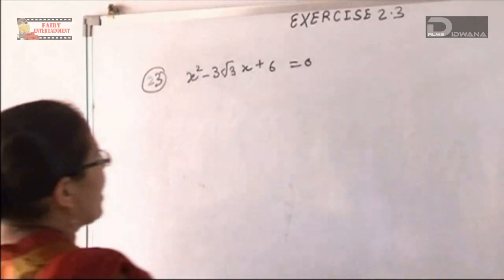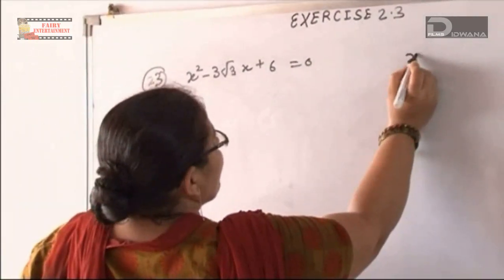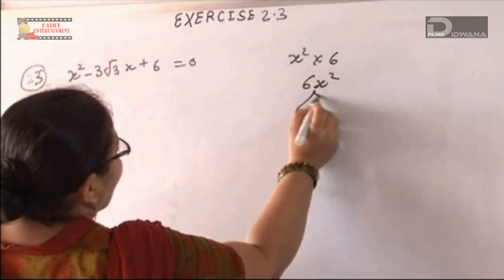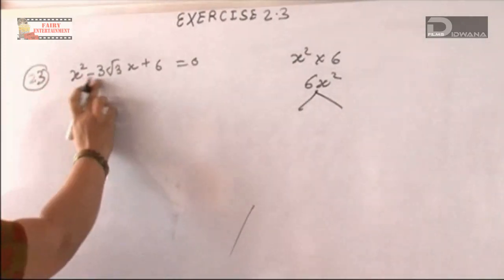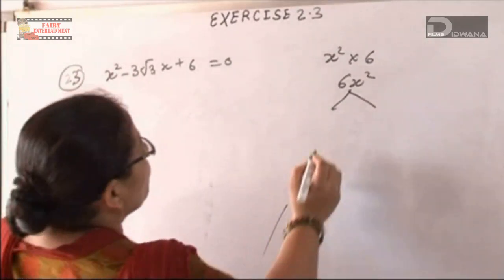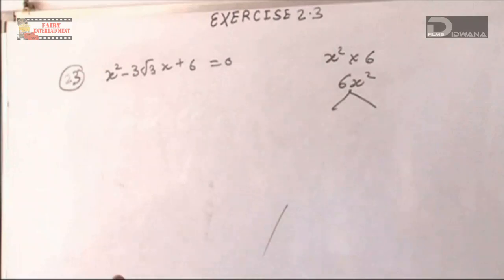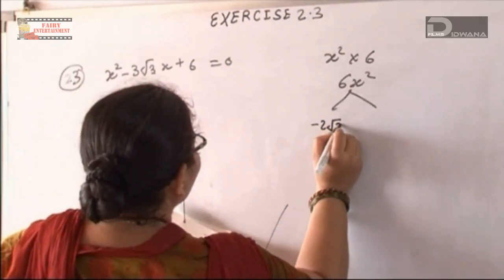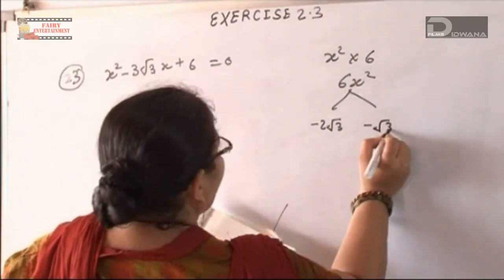We will multiply first value and third value. The first value is x² multiplied by 6, so 6x². We will make the factor of 6x². We want minus 3√3, so we will make the factor minus 2√3 and minus √3.